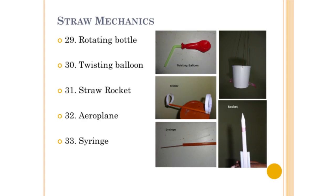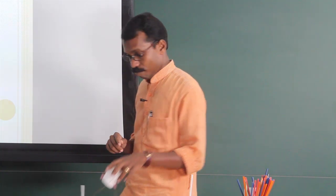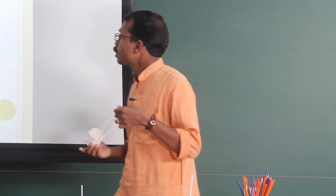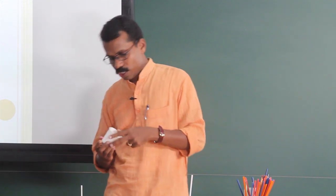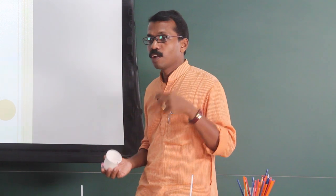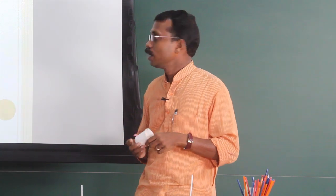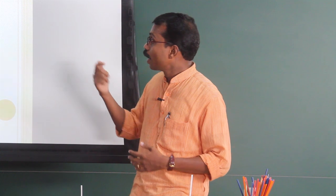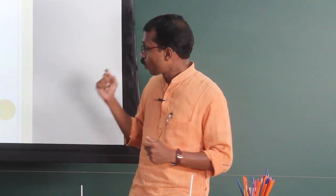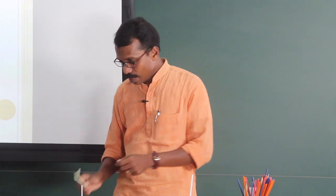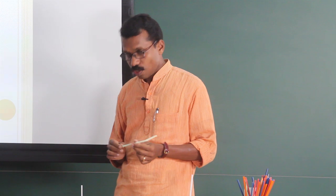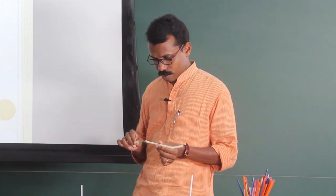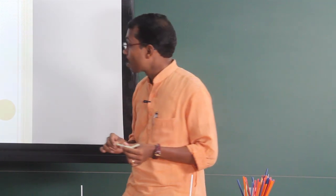A rotating balloon: if a straw is placed at the back, it rotates. A bottle containing water that twists in the opposite direction demonstrates that every action has an equal and opposite reaction. There is also a straw glider, straw rockets, and a syringe made using a straw with a stick and rubber bands.